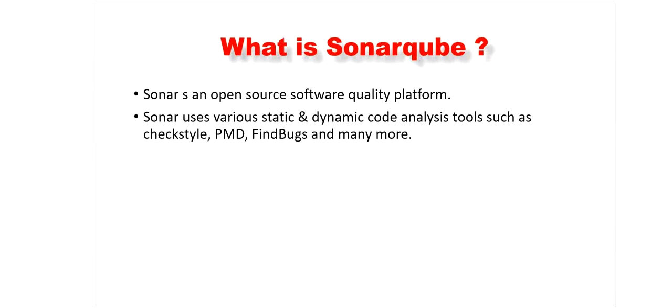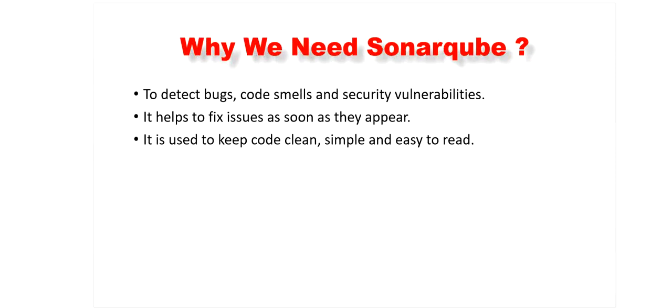SonarQube also checks for duplication of code, lack of unit test cases, potential bugs, and non-compliance with coding standards. And why do we need SonarQube? Because code quality is an extremely important parameter for software quality deliverables and affects the overall success of a software. SonarQube is used to detect bugs, code smells, and security vulnerabilities before executing the program. It helps to fix issues as soon as they appear before executing our application, and it keeps code clean, simple, and easy to read and understand.